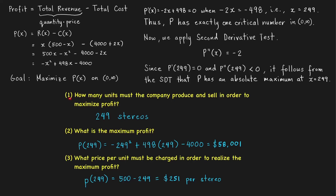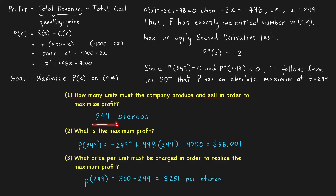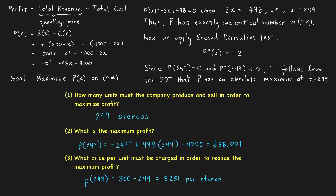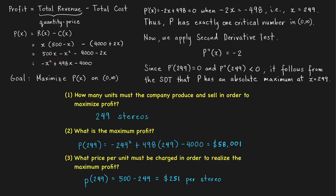Now we're ready to answer all the questions. First: how many units must the company produce and sell to maximize profit? The answer is 249 stereos, since X = 249 gives the maximum value of the profit function P. Second: what is the maximum profit? This is the value of our profit function at X = 249: negative (249) squared plus 498 times 249 minus 4,000, which equals $58,001.